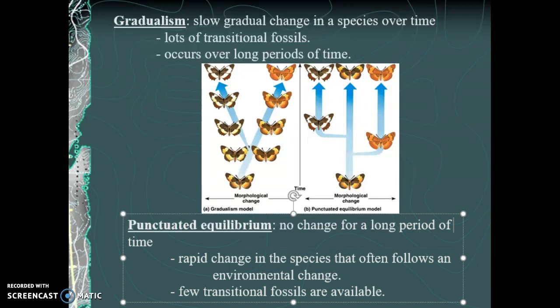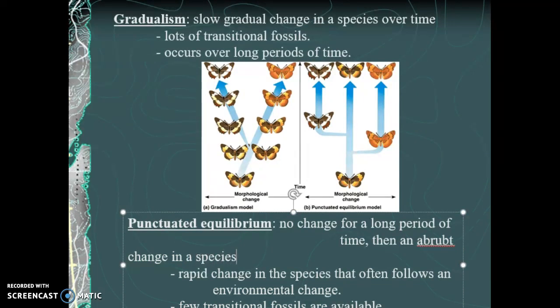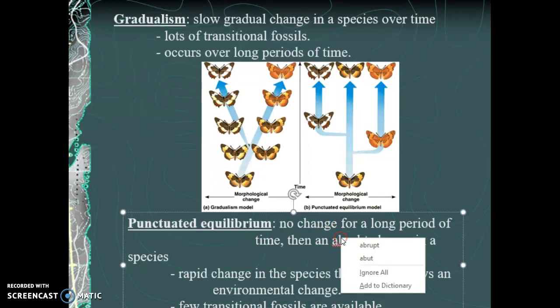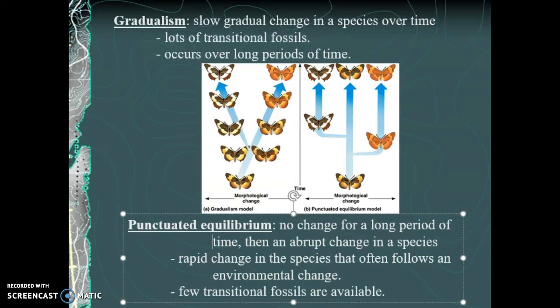The second macroevolutionary pattern is called punctuated equilibrium. In punctuated equilibrium, there is no change for a long period of time, then an abrupt change in a species. Something happens environmentally — maybe continents are drifting — and all of a sudden new species evolve because of a fairly rapid environmental change. That might be 20,000 to 50,000 years, during which environmental change pushes species to extinction, and surviving species adapt and evolve very quickly. Because of this rapidity, we often have very few transitional fossils for punctuated equilibrium.